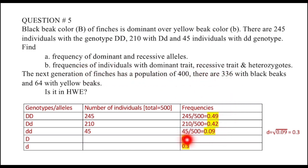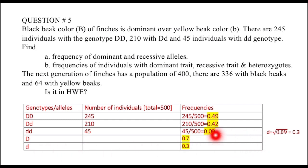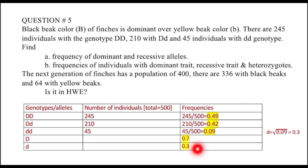Taking the square root of Q² = 0.09, Q = 0.3. As P + Q = 1, P = 1 − 0.3 = 0.7. So the frequency of the dominant allele D is 0.7 and the recessive allele d is 0.3.